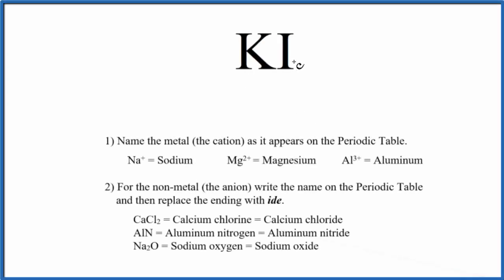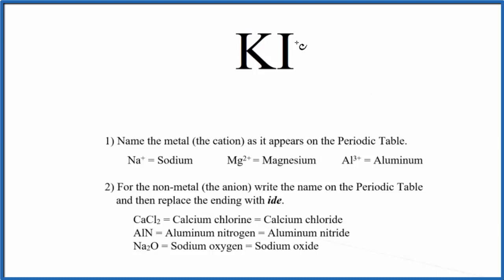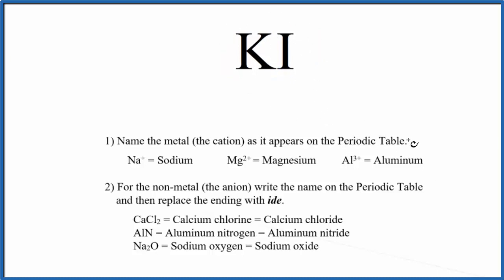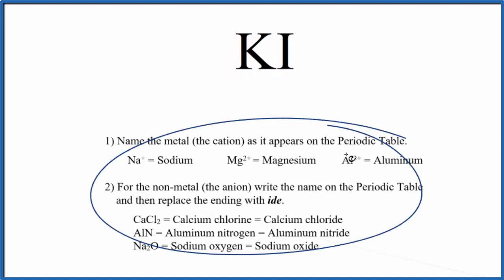To write the name for KI, we first need to recognize that this is an ionic compound, because we have a metal bonded to a nonmetal. Metal and nonmetal gives us an ionic compound, and we need to think about the ionic charge. We should also note that this is a binary ionic compound, because we have two different elements bonded together. When we have a binary ionic compound, we use these rules to write the name.